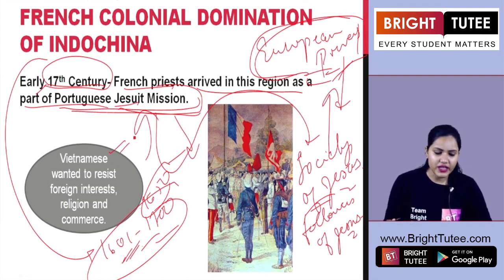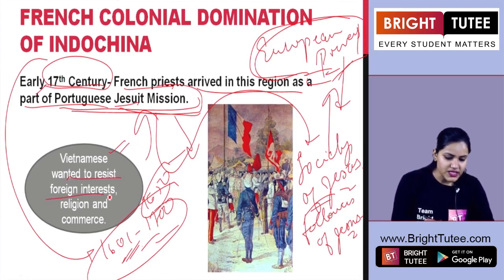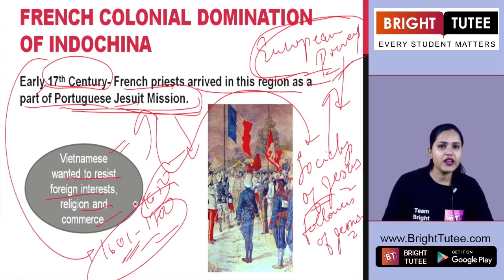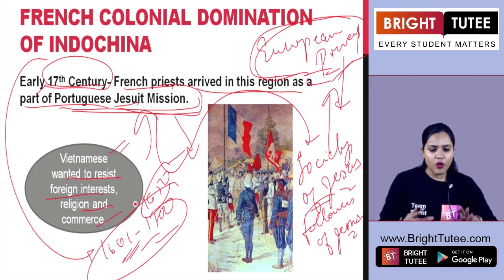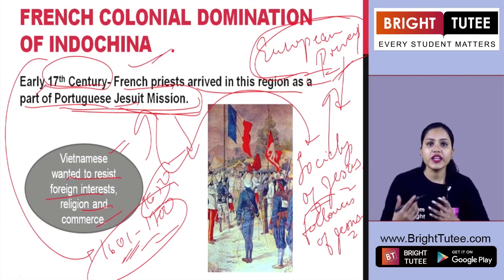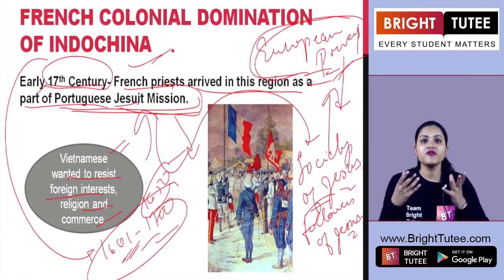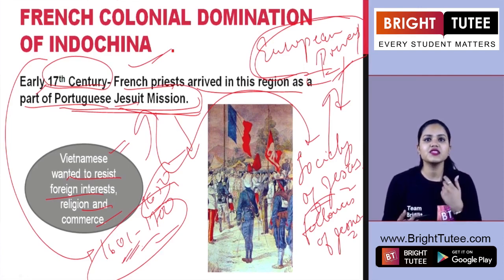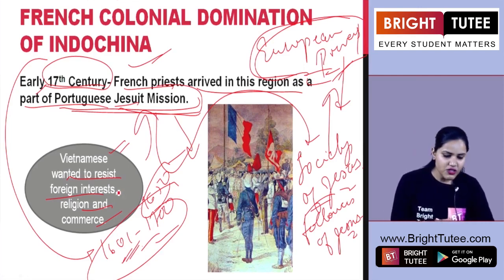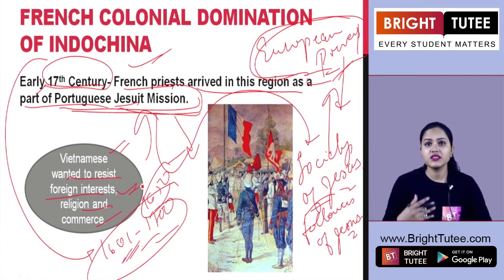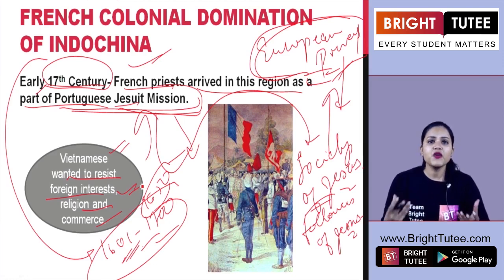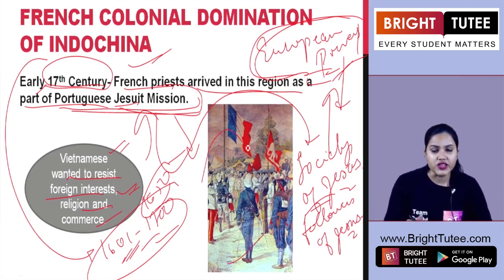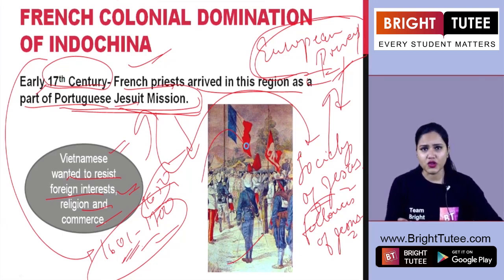In the beginning, the Vietnamese wanted to resist foreign interest, religion, and commerce. The people of Indochina wanted to resist this foreign power and its foreign interest, religion, and commerce. The basic idea of the colonizers was to extract maximum profit from these regions.